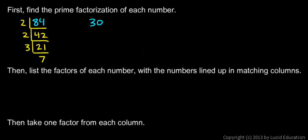And let's find the prime factorization of 30. Well 30 is divisible by 2, and that leaves us with 15. 15 is not divisible by 2, but it is divisible by 3. 15 divided by 3 is 5. So 30 factors as 2 times 3 times 5.